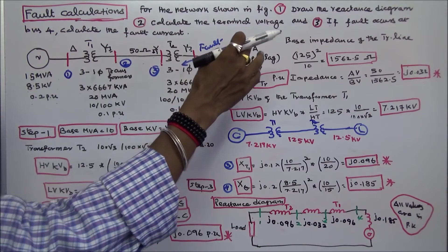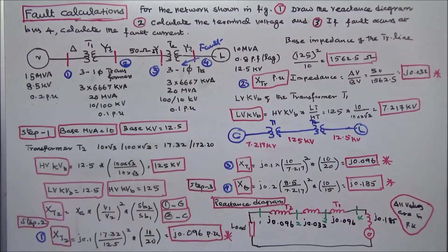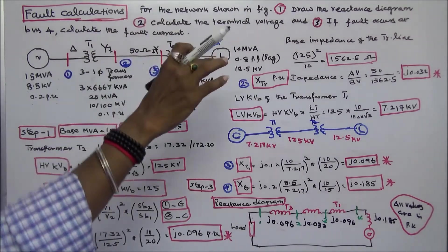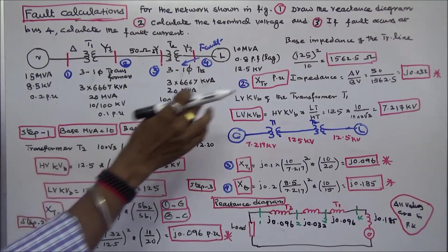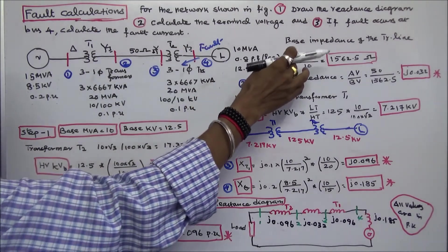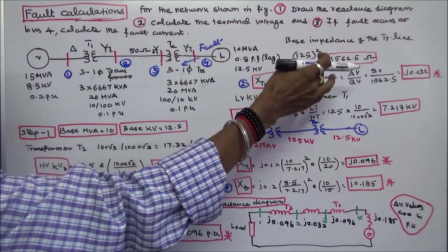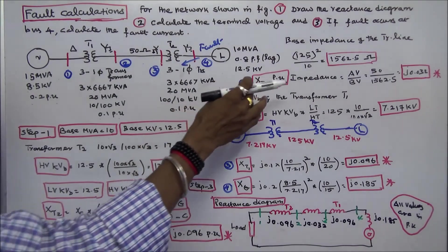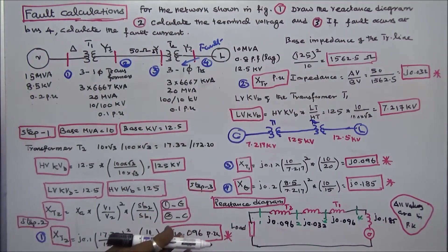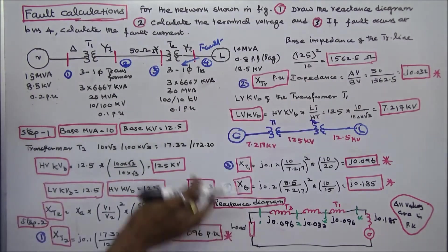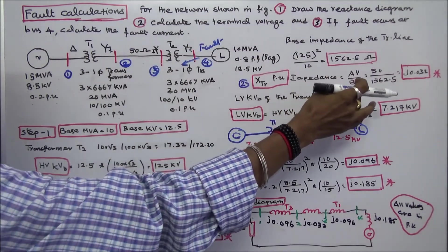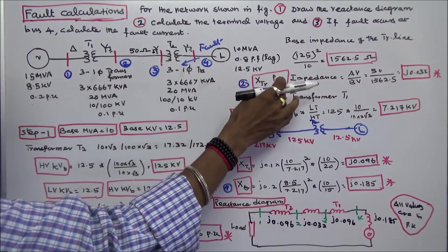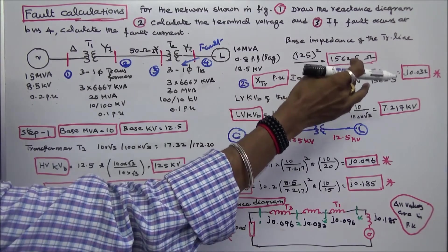Next I calculate the base impedance of the transmission line. The voltage base is 125 kV, so base impedance equals 125² / base MVA = 125² / 10 = 1562.5 ohms. Per unit reactance of the transmission line equals actual value divided by base value: 50 / 1562.5 = j0.032 per unit.